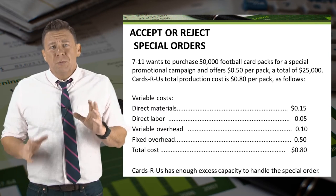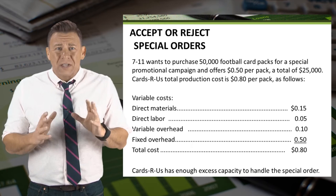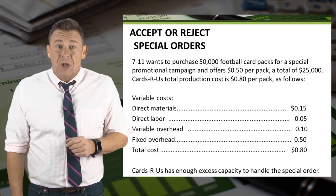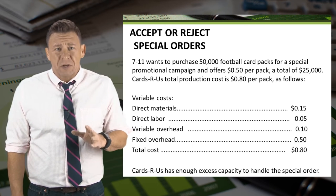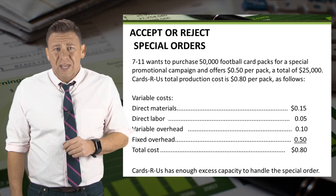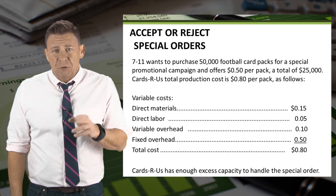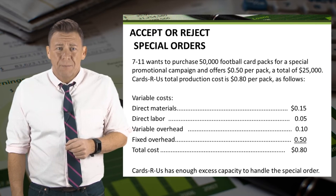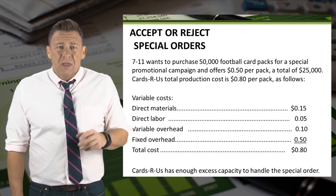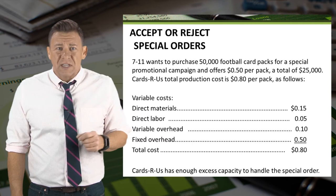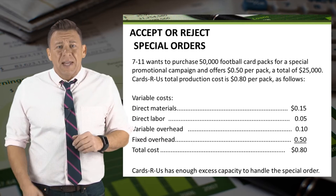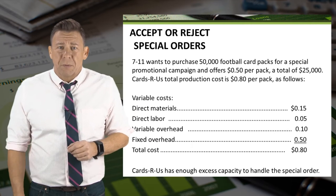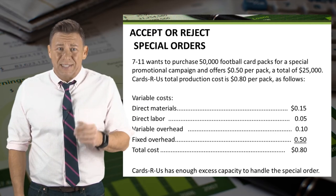Assume 7-Eleven stores wants to purchase 50,000 football cards for a special promotion at a special price of $0.50 per pack. The manufacturer, Cards R Us, has a total production cost per pack of $0.80.